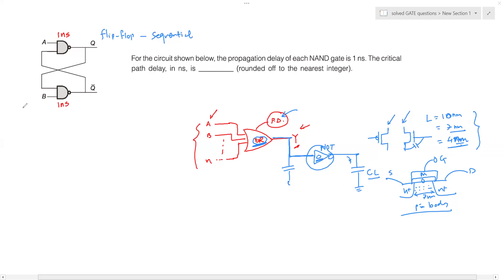With that understanding of propagation delay, let's address the problem statement. We need to find the critical path delay in nanoseconds. The critical path delay is the longest time for an input of the circuit to reach the output. In a digital logic circuit, the critical path delay is the longest path from any input to any output. We can redraw the circuit to identify this longest path.